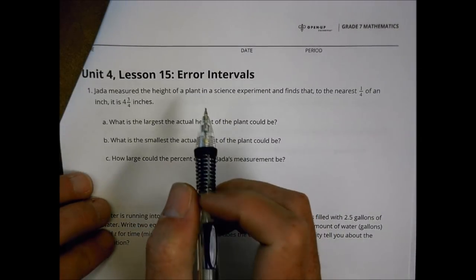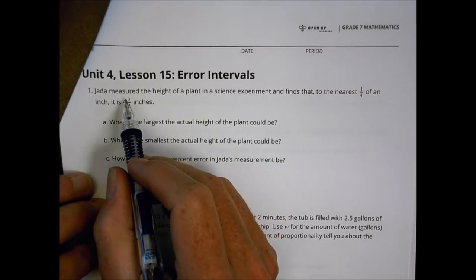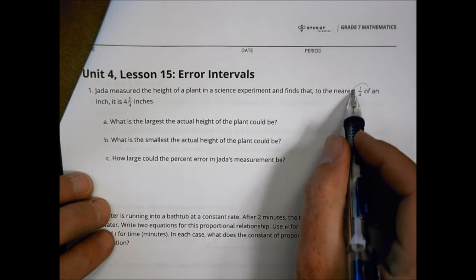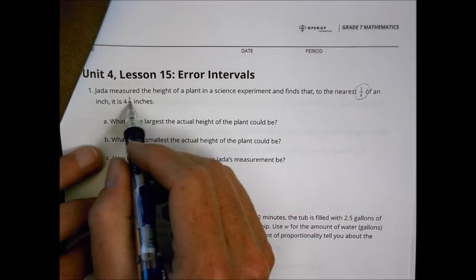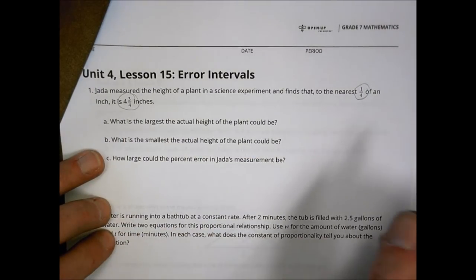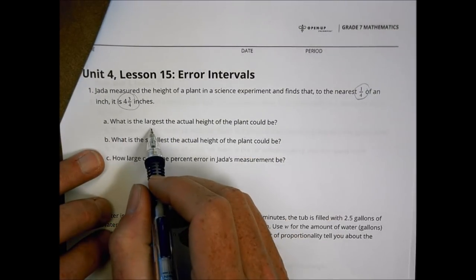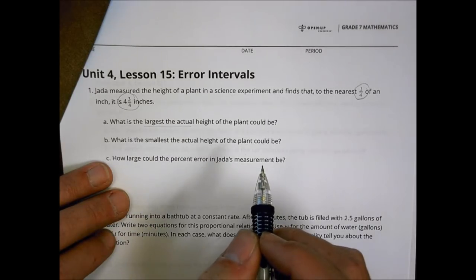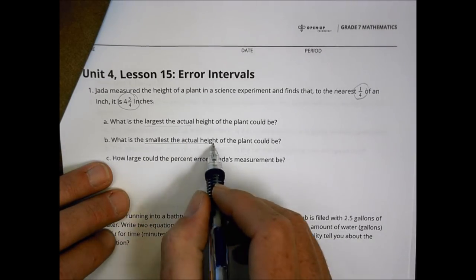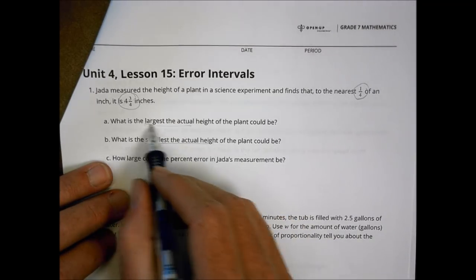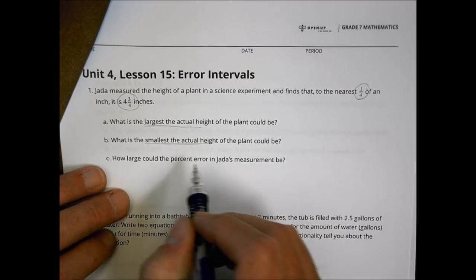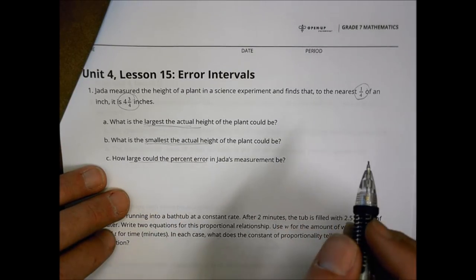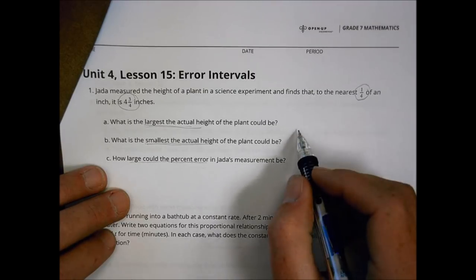Alright, here we go for the homework for Lesson 15. It says Jada measured the height of a plant in a science experiment and finds that to the nearest quarter of an inch, it is 4 and three-fourths inches. We're going to be asked: what is the largest actual height the plant could be, what is the smallest it could be, and how large could the percent error be in the measurement?